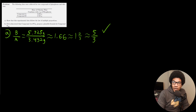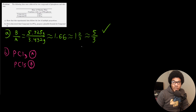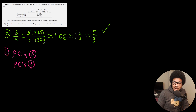Part B asks: if compound A is PCl3, propose a plausible formula for compound B. We know there is a five to three ratio between compound B and compound A. So if compound A is PCl3, then the formula for compound B must be PCl5, because there's a five to three ratio between compound A and compound B — three chlorines versus five chlorines.